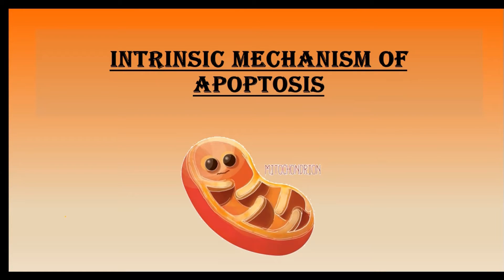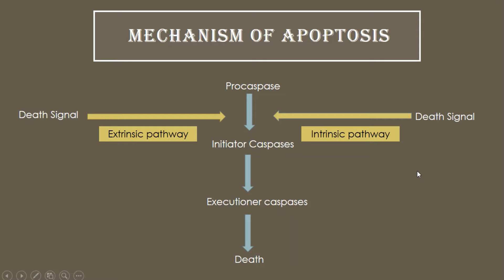A very warm welcome everyone, my name is Harshita and today we will discuss the intrinsic mechanism of apoptosis. In the last video we discussed the mechanism of apoptosis, where we saw how a death signal causes activation of the caspase process leading to the death of the cell. The death signal can follow two pathways: the extrinsic pathway and the intrinsic pathway. We have already covered the extrinsic pathway in the previous video, with a link in the description box.